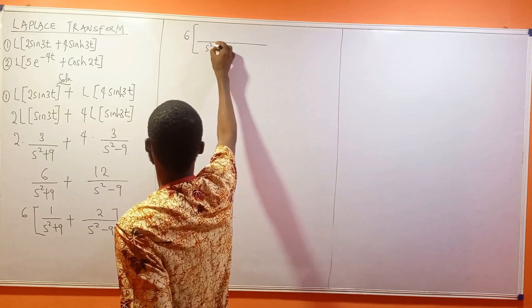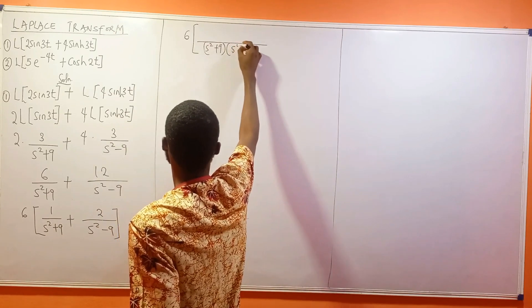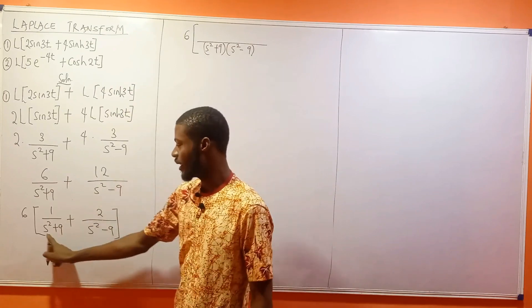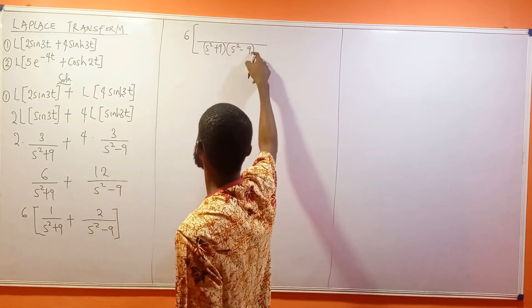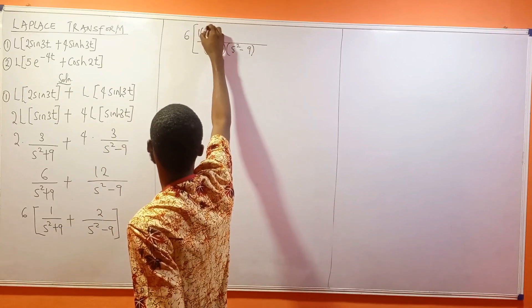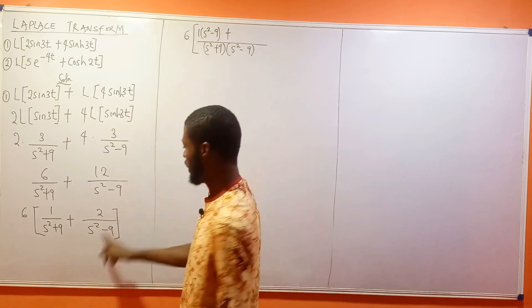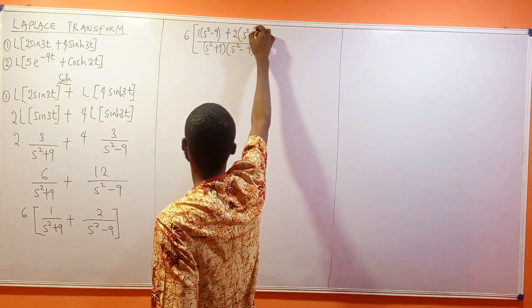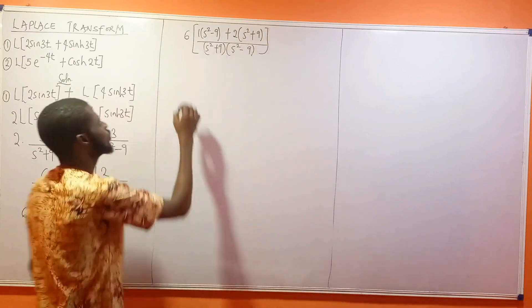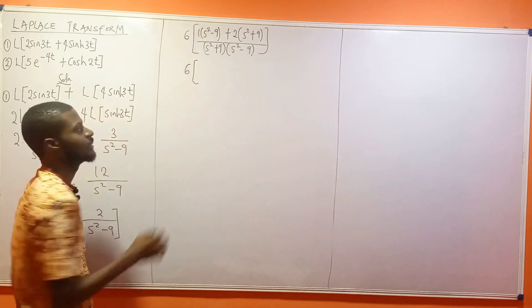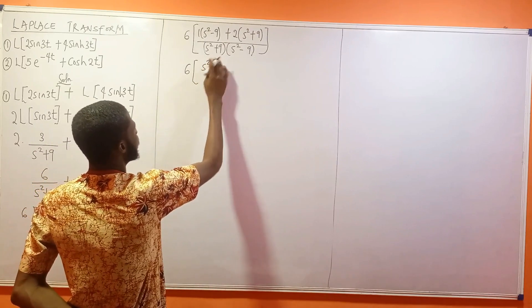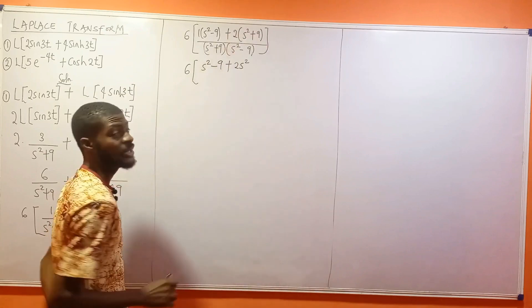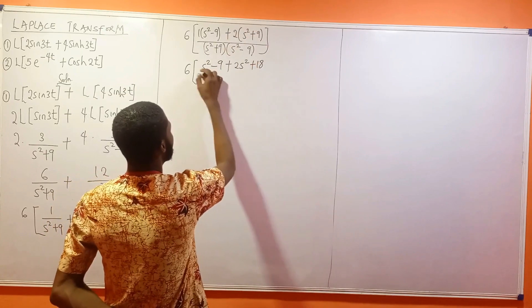The LCM of s² plus 9 and s² minus 9 is just their product: (s² + 9)(s² - 9). Dividing by s² plus 9 leaves s² minus 9 times 1, and dividing by s² minus 9 leaves s² plus 9 times 2. So we get 6 times (s² minus 9 plus 2s² plus 18) divided by (s² + 9)(s² - 9). Notice the denominator is a difference of two squares: s⁴ minus 81.